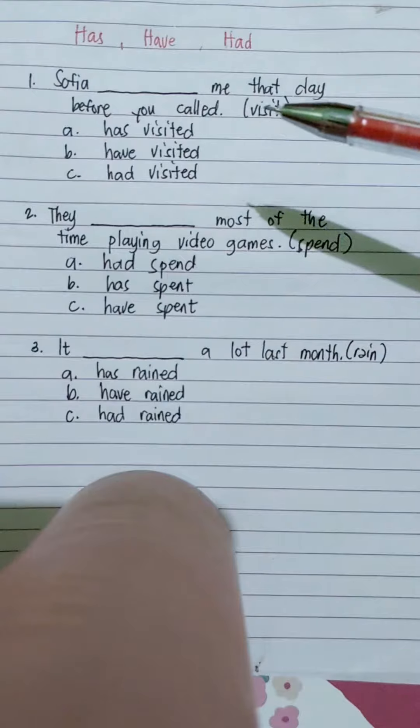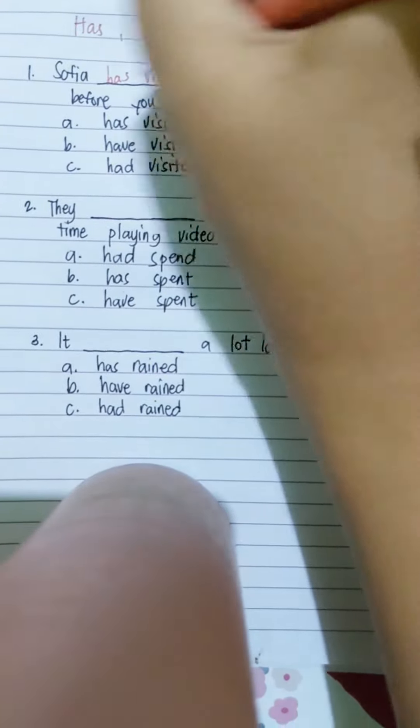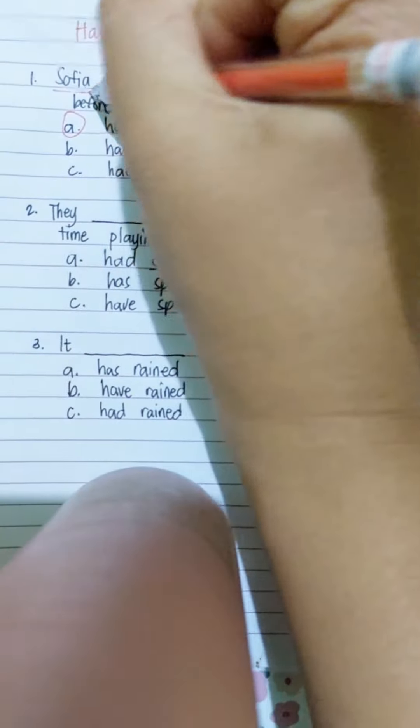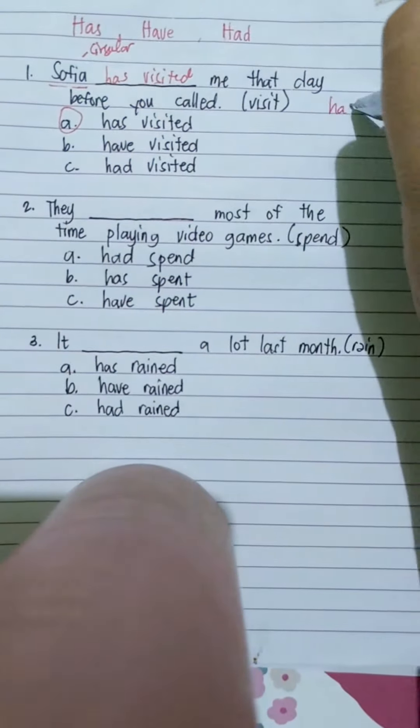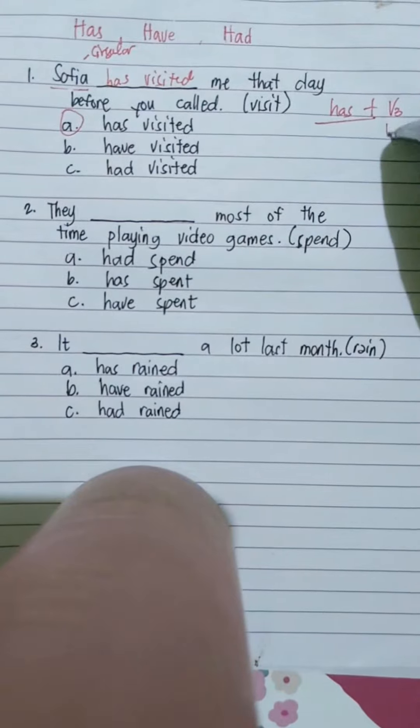It's has visited, letter A. Why do you think it is? It's because the subject here is Sophia, which is a singular subject. So we use has plus the V3 of the verb, which is the past participle of the verb.